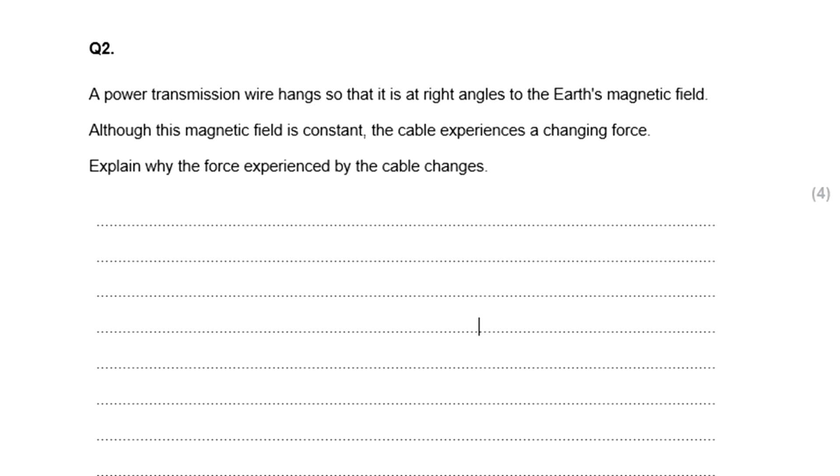Compared to other GCSE standard questions, this is actually quite a tough one. You've got to know quite a few things to be able to get all four marks on this question, but essentially we just have some power lines hanging from pylons in the air. They are at 90 degrees to the earth's magnetic field. Why are they continually experiencing a changing force? Pause the video now.